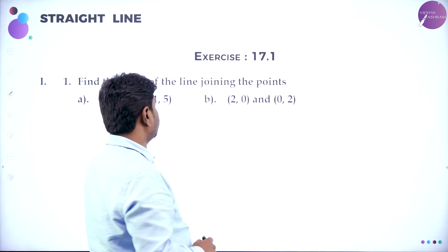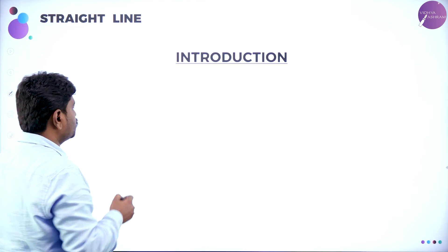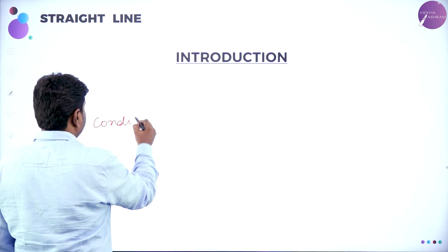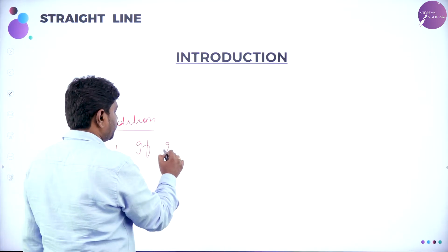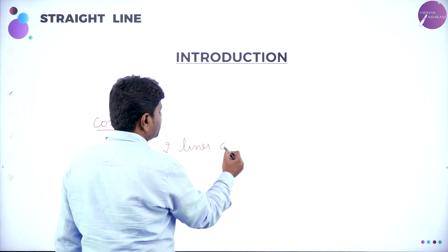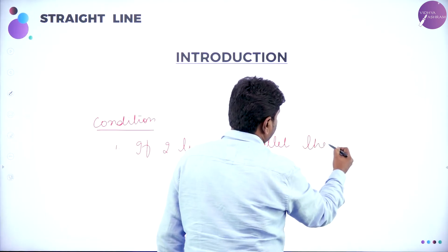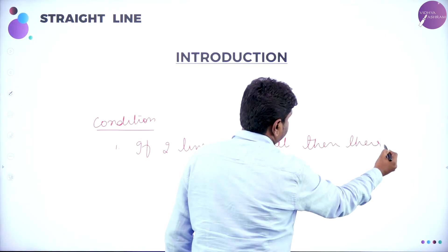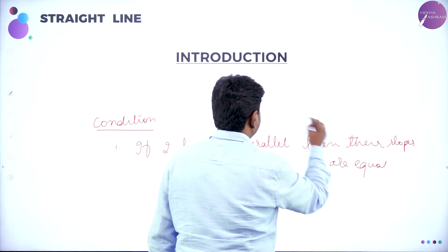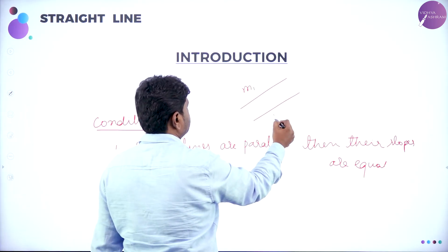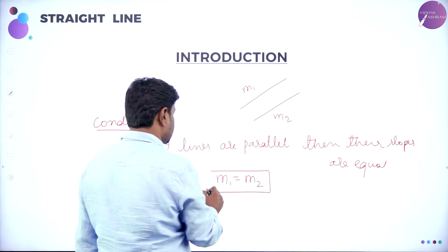Now we have conditions. Dear students, now you know how to find slope. Condition number 1: if two lines are parallel, slopes are equal. If two lines are parallel, they make the same angle with X-axis, so their slopes are equal. If this is M1 and this is M2, then M1 will be equal to M2.